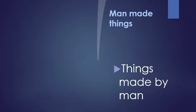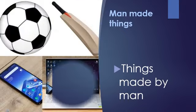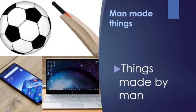Next is man-made things. Man-made things means the things that are made by man — and we are the man. Man-made things can be a football, a bat, a mobile, a laptop — these are just examples. If you're wearing an earphone, it is also a man-made thing. If you're watching this video on a mobile, that mobile is a man-made thing. If you're watching on a laptop, the laptop is a man-made thing. If you look around, you can see a lot of man-made things.